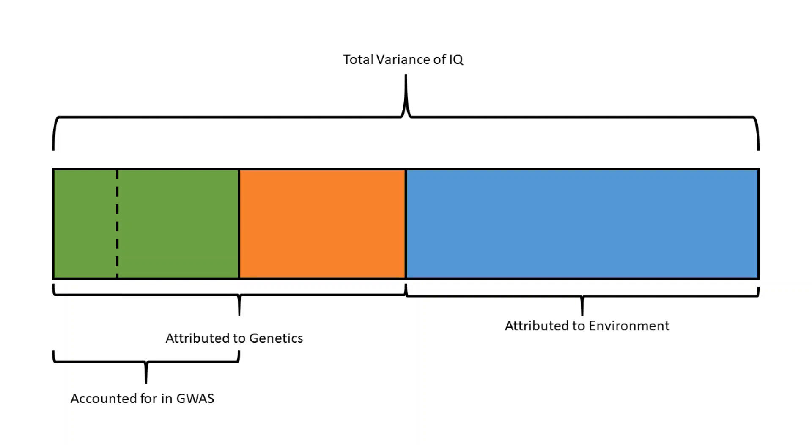Heritability acts like a kind of upper limit to what can be predicted by polygenic scores. So researchers can strive to be able to predict up to 50% of the variance in IQ scores by looking at the genome.